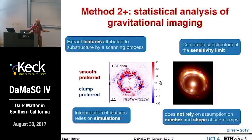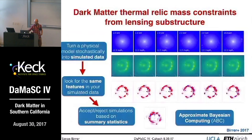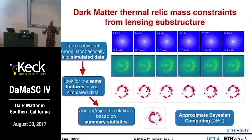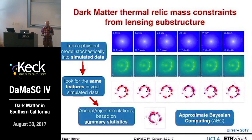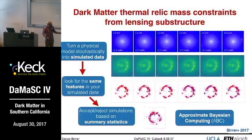The next step is making sense of these features using thousands of simulations. We take a physical model — here we use the free-streaming length of a dark matter particle — and turn it into a stochastic model where each realization represents different free-streaming ranges or thermal relic masses. We generate thousands of these models with arbitrary clump positions in the image, turn all of them into simulated data that looks visually indistinguishable from the real data, and then run exactly the same feature extraction pipeline on all of these simulated datasets. This produces feature maps from different stochastic realizations of different dark matter models, and we accept or reject simulations based on a summary statistic measuring how different the feature maps are.